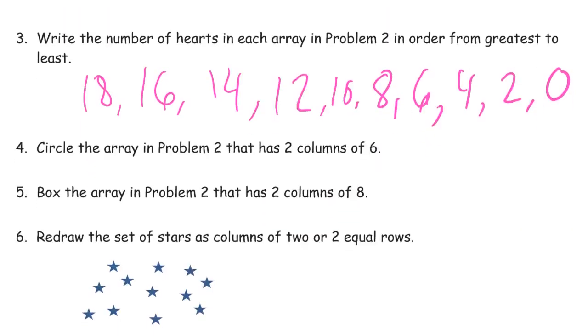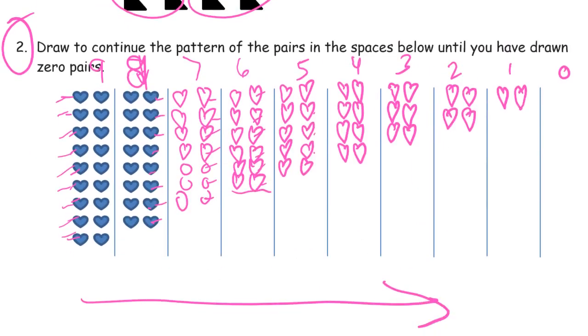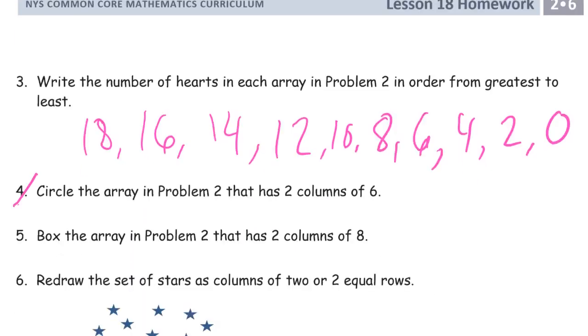Circle the array in problem two that has two columns of six. So I'm going back here. Which one has two columns of six? Well, I labeled them, right? So that's pretty easy to find. Two columns of six. And if you can count if you want, that's one, two, three, four, five, six in each column. So, got that one done.